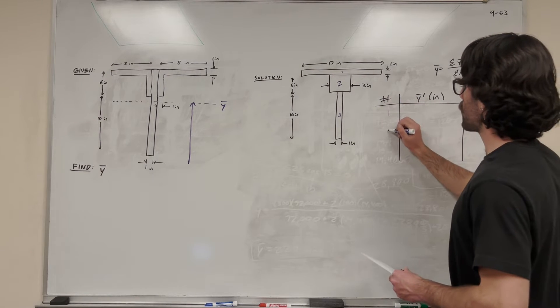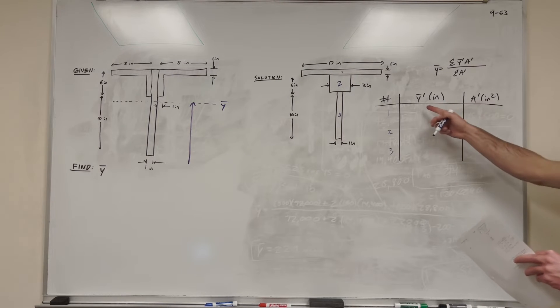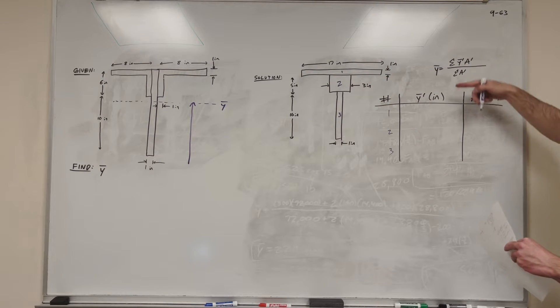So now we have shape number one, shape number two, and shape number three. So let's go ahead and fill up this table. So we want to find the center of mass of each shape and the area of each shape, and we're going to use those. Once we find this table, it's going to be super easy to plug into an equation here.